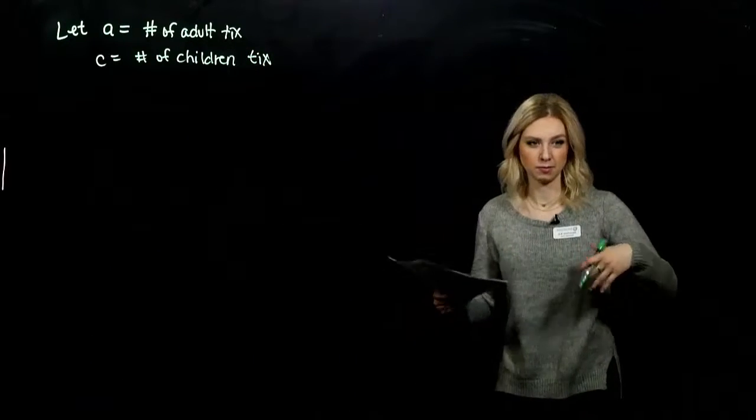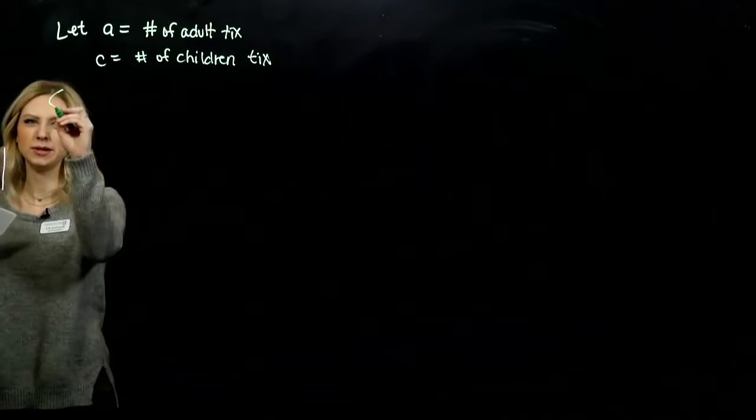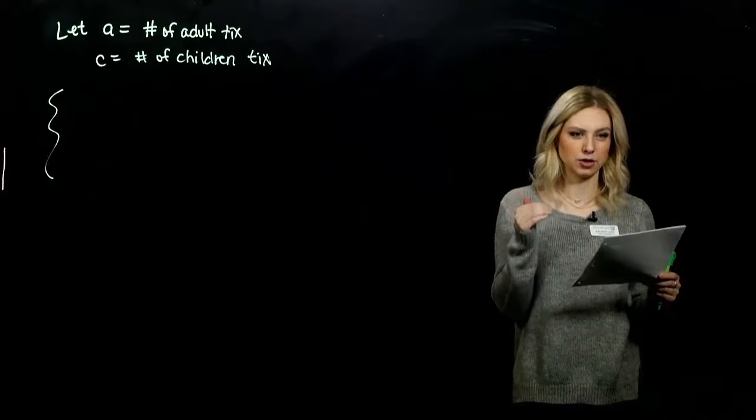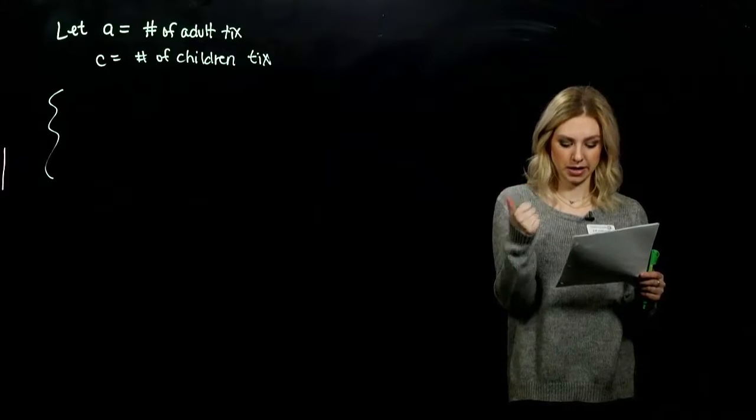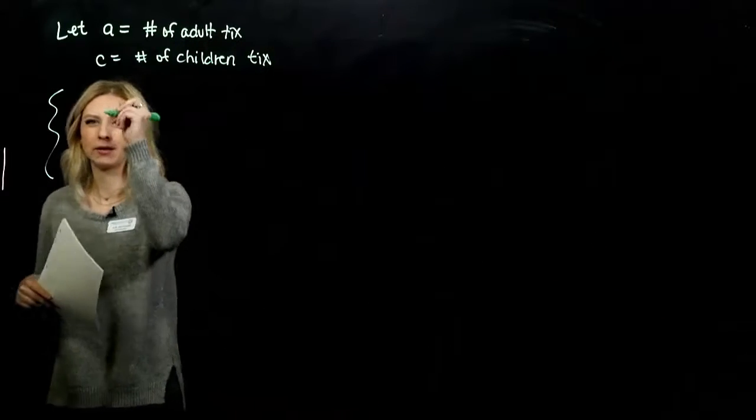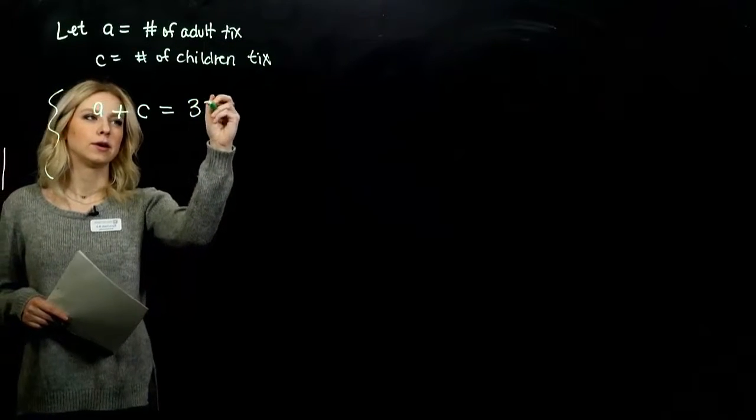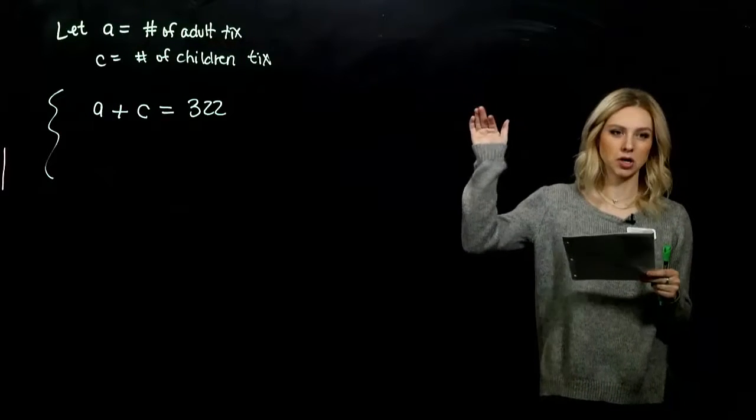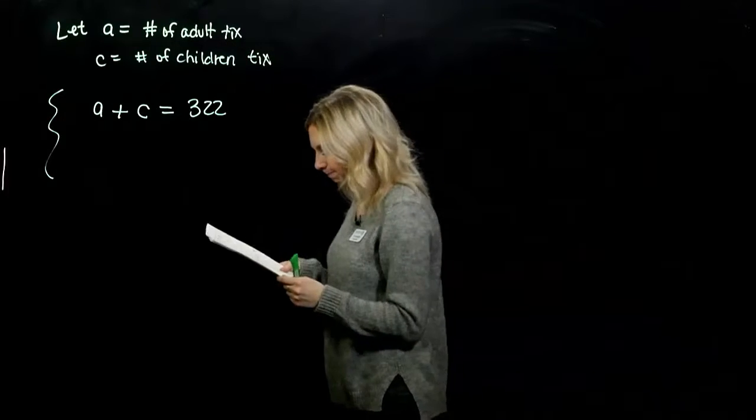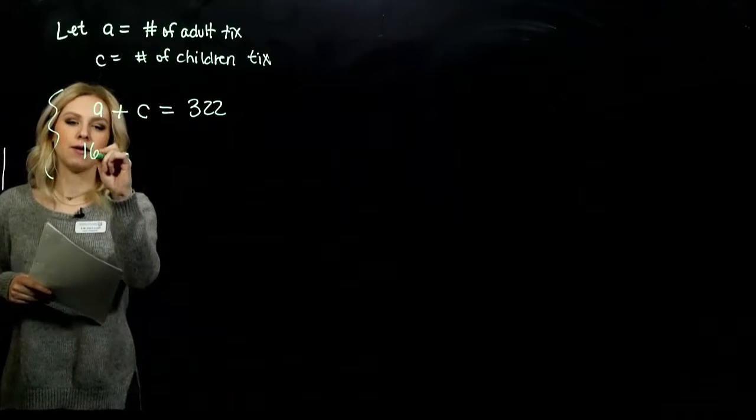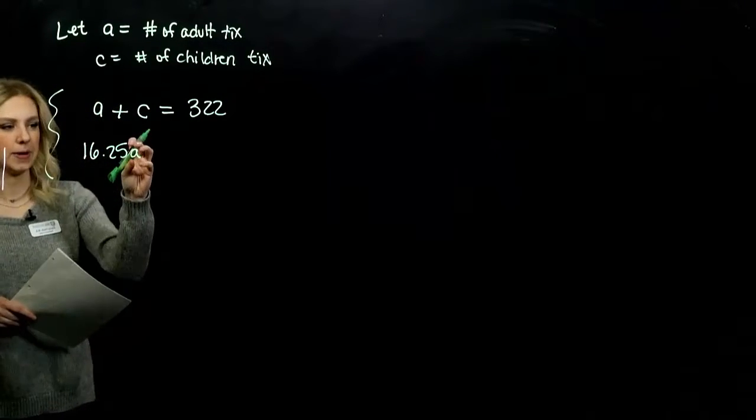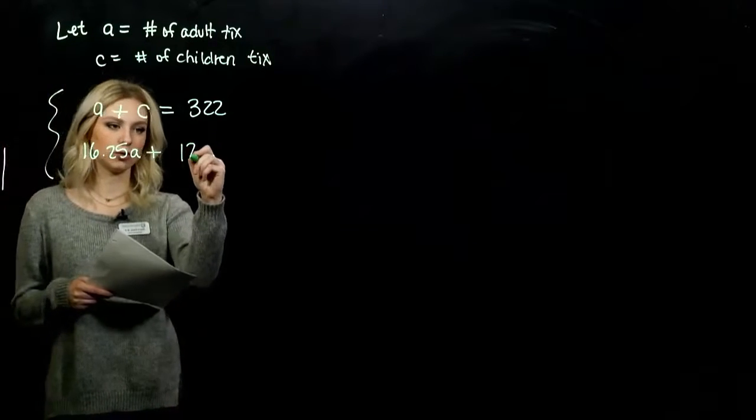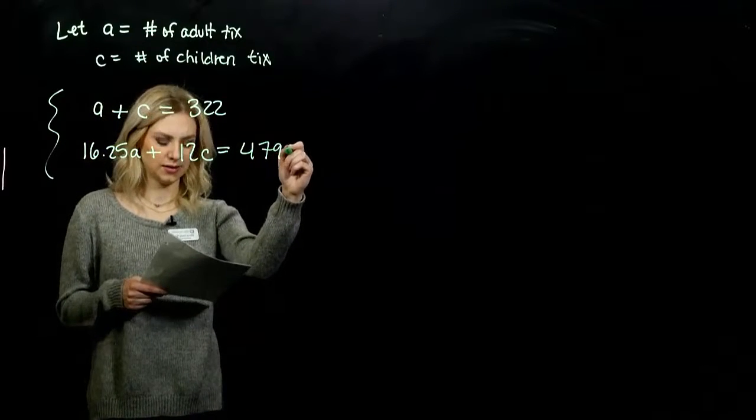Then with those variables, we can build a system to be able to solve. Altogether, there were 322 people at the showing. So adults and children together, however many attended, totaled 322. The other piece of information that we know was the price per ticket and in total what the receipt was. So it was 16.25 for every adult, and the children totaled 4,790.50 altogether.